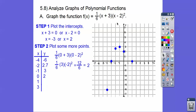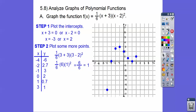Since x = 2 is a double root, the hump is going to be right on the x-axis. If it's a double root, then one of your turning points is on the axis. When we plug in x = 1, we get about 0.7. When we plug in x = 3, we get 1. If we plug in x = 4: 4 + 3 = 7, 4 - 2 = 2, 2² = 4, 7 times 4 = 28, and (1/6)(28) is about 4 and 2/3.